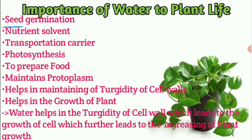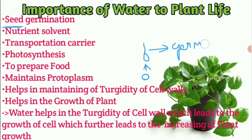For example, consider a seed. From the seed, first a small shoot emerges — this process is called germination. For germination to occur, first we need water. Water is compulsory for germination.